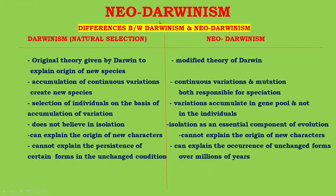Now, differences between Darwinism and Neo-Darwinism. Darwinism is the original theory of natural selection given by Darwin in 1859 in his book to explain the origin of new species, but Neo-Darwinism is a modified theory of Darwin. In Darwinism, accumulation of continuous variations creates new species; according to Neo-Darwinism, both continuous variations and mutations are responsible for speciation.